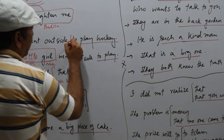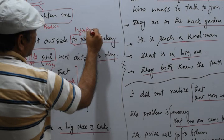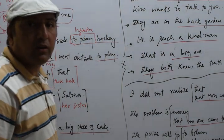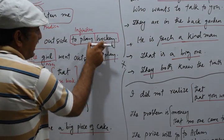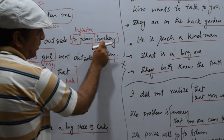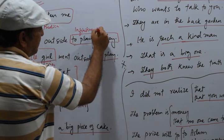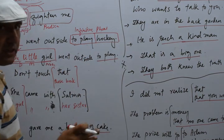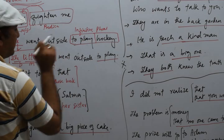We also have 'to play hockey.' To play is an infinitive — to plus verb. When an infinitive is working as a noun, we call it an infinitive. 'To play hockey' is an infinitive phrase, and it does not give complete meaning, so this is an infinitive phrase.